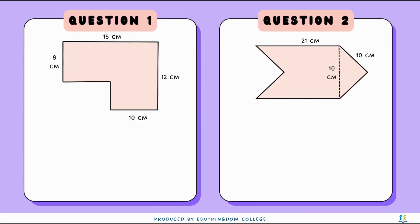Now that we have learned the basics of perimeter and area, let's have a look at these two shapes. These two shapes aren't a perfect shape, so we can't classify them as a rectangle, square, or any other standard shape. But how can we find the perimeter and the area of these shapes? Let's have a look at question 1 — let's find the perimeter.